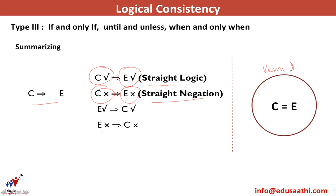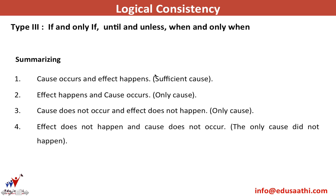In the Venn diagram, C equals E — the cause and effect circles are the same, because there is just one cause and one effect. C leads to E: straight logic when the cause occurred and the effect happened, and straight negation when the cause did not occur and the effect did not happen. Summarizing: cause occurs and effect happens — sufficient cause; effect happens and cause occurred — it's the only cause; cause does not occur means the effect does not happen; effect does not happen means the only cause did not occur.